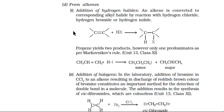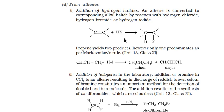Now we move to the next method of preparation: from alkene. As we know, if an alkene is allowed to react with hydrogen halide, Markovnikov's addition rule is applied, so we would get a haloalkane according to Markovnikov's addition rule. According to Markovnikov's addition rule, the nucleophile or the halide ion would attack on the double-bonded carbon which has more substitution, or more precisely, the one which has a lower number of hydrogen atoms.